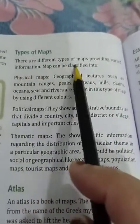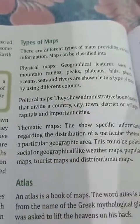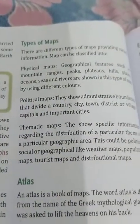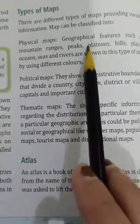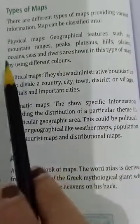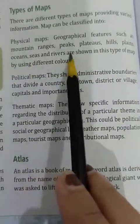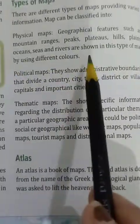There are different types of maps providing various information. Maps can be classified by geographical features such as mountain ranges, peaks, plateaus, hills, plains, oceans, seas, and rivers, which are shown using different colors. This type is called a physical map.